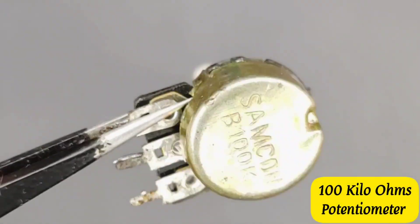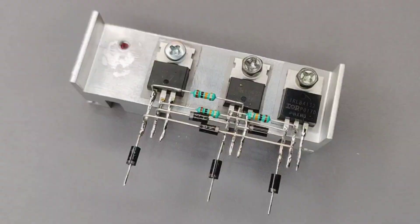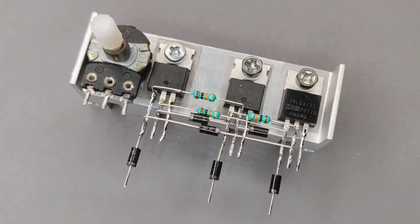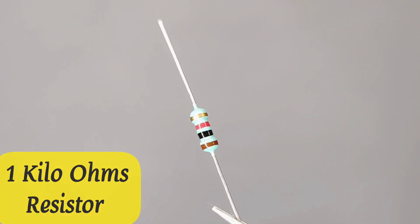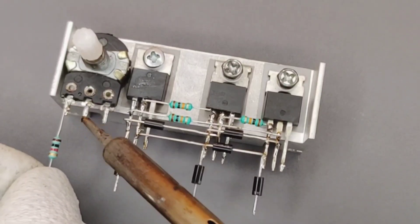Take a 100k ohm potentiometer and place it over here. Take a 1k ohm resistor and solder on first pin of potentiometer.